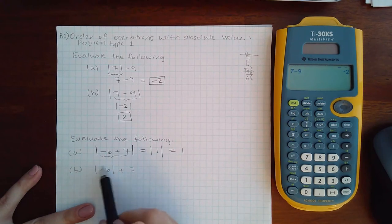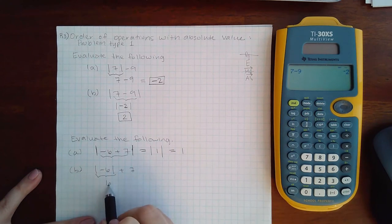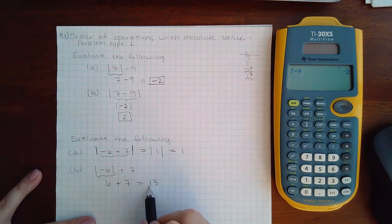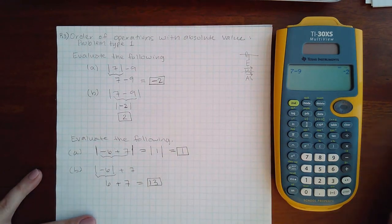Here there's nothing to do on the inside, so the next step is to evaluate this. The absolute value of negative six is positive six, and if I add seven, I end up with 13. And so those would be the two responses here.